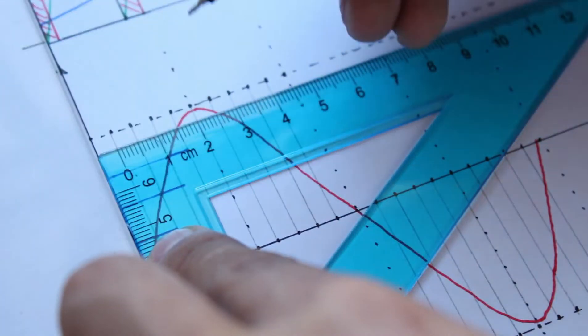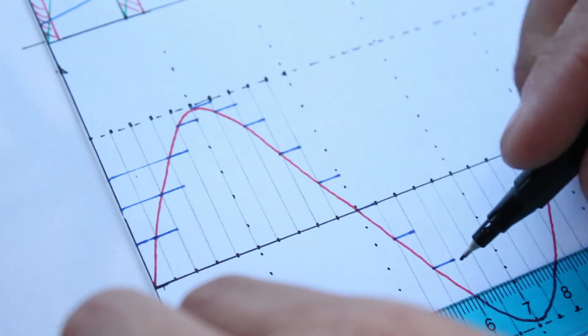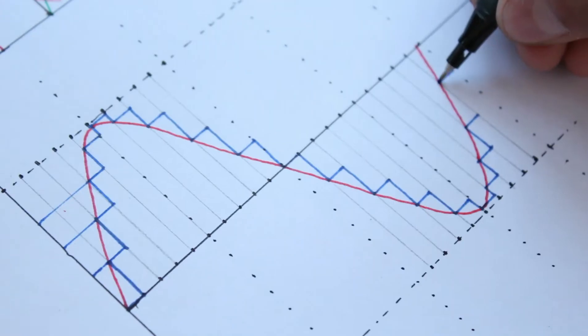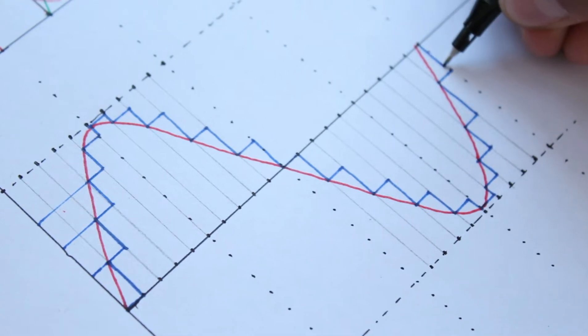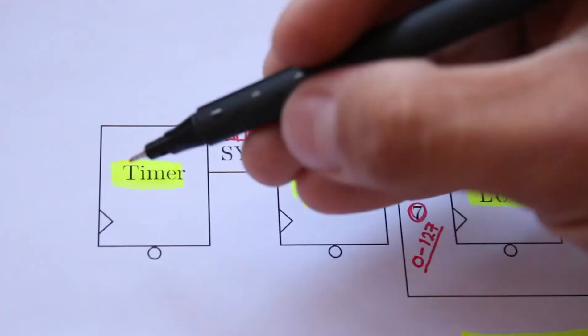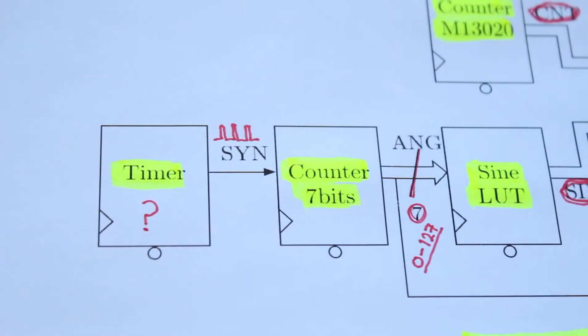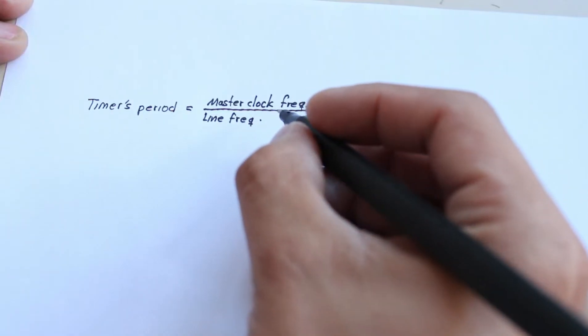I want the sine lookup table to have 128 points. Every point of the sine is an integer value which ranges between 0 and the maximum duty cycle, but at this point immediately rises the following questions: which is the maximum duty cycle and what's the timer period.